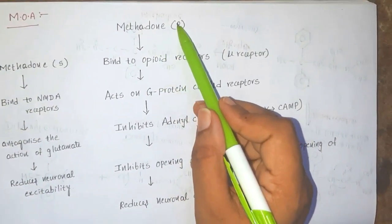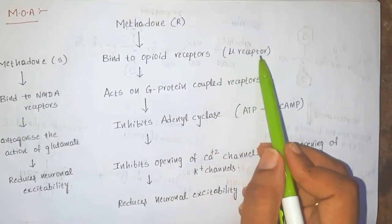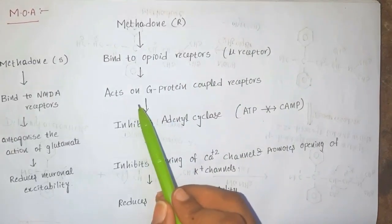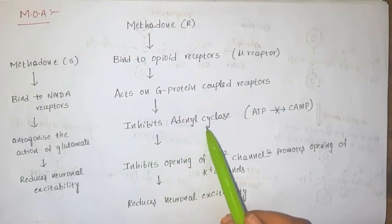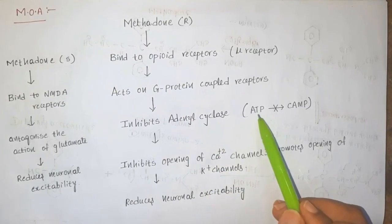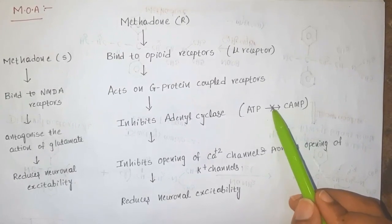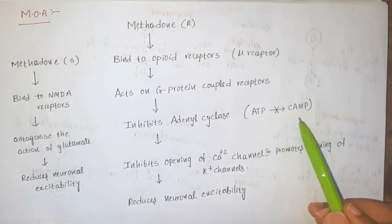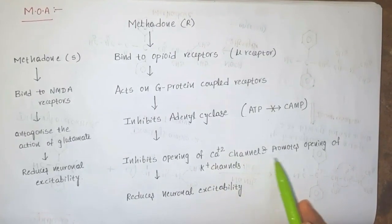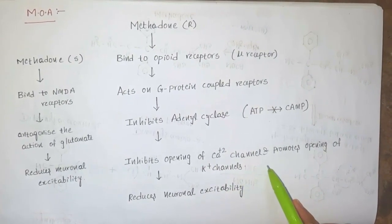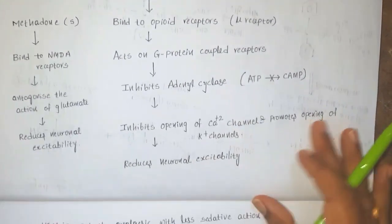The levo form of methadone binds to the opioid receptor, particularly the mu receptor, which acts on a G protein-coupled receptor and inhibits adenylyl cyclase enzyme, which is mainly used to convert ATP to cAMP. This finally decreases cAMP levels, inhibits the opening of calcium channels, and promotes opening of potassium channels, ultimately reducing neuronal excitability.